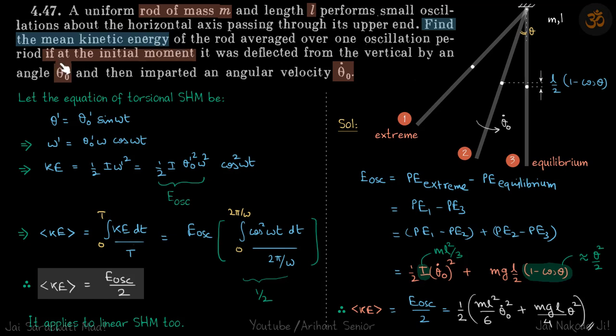First let's derive a general formula for the mean kinetic energy of oscillation over one oscillation period, and then we'll use this formula directly in this particular case. So for any body, need not be a rod, can be a disc which is rotating about its axis, so any torsional SHM...